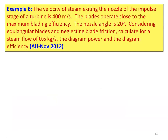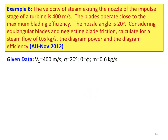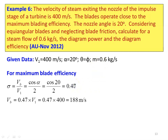Example 6. Steam velocity exiting nozzle of an impulse stage is 400 meters per second. The blade operates at maximum blade efficiency. Nozzle angle is 20 degrees. Equiangular blading, neglecting blade friction. For a steam flow rate of 0.6 kg/s, calculate diagram power and diagram efficiency. Given: V1 equals 400 m/s, alpha equals 20 degrees, theta equals β, mass flow rate equals 0.6 kg/s. For maximum blade efficiency, sigma equals VB/V1 equals cos alpha divided by 2 equals 0.47, so VB equals 0.47 into 400 equals 188 m/s.